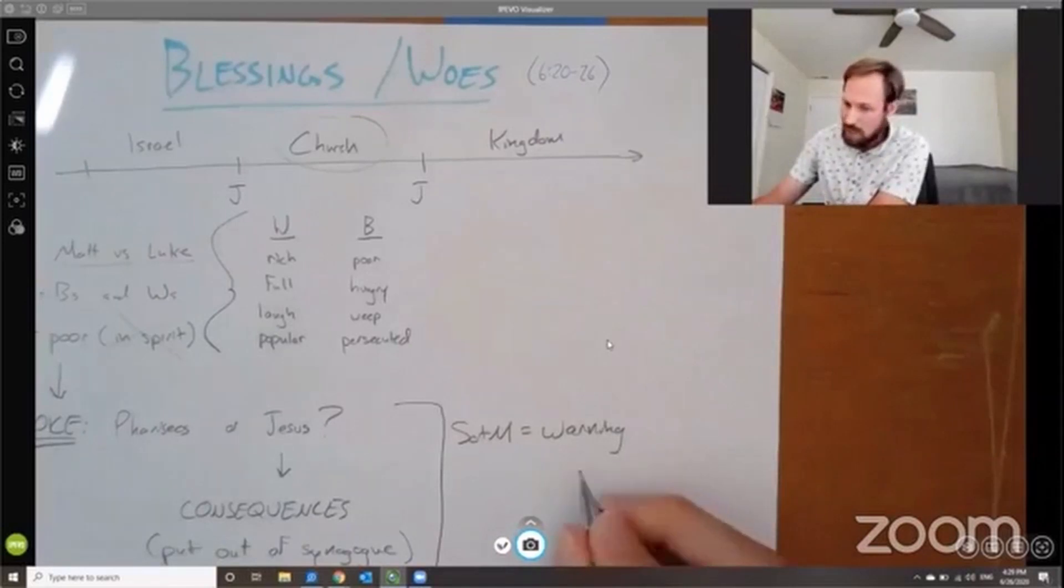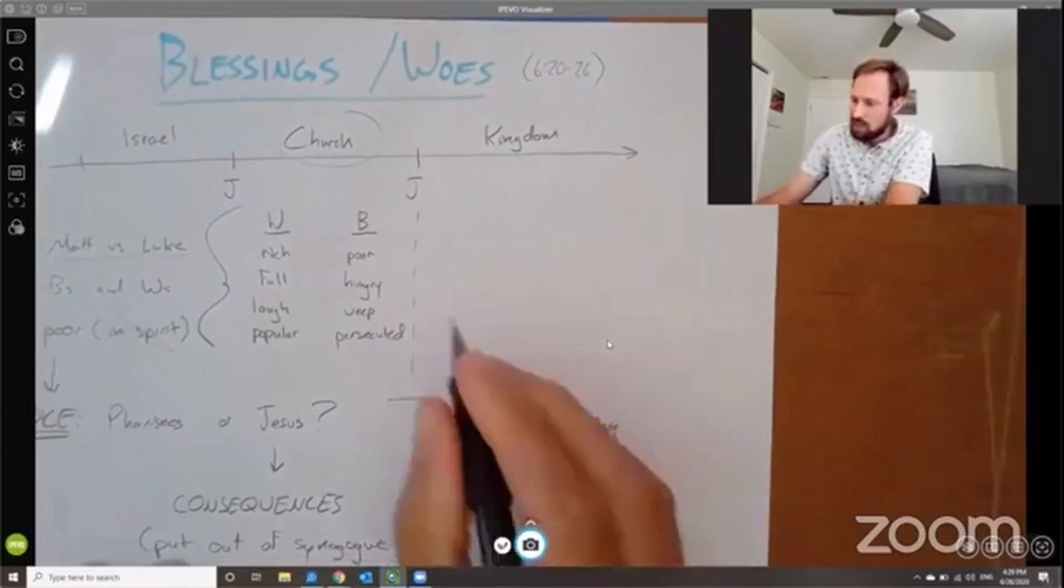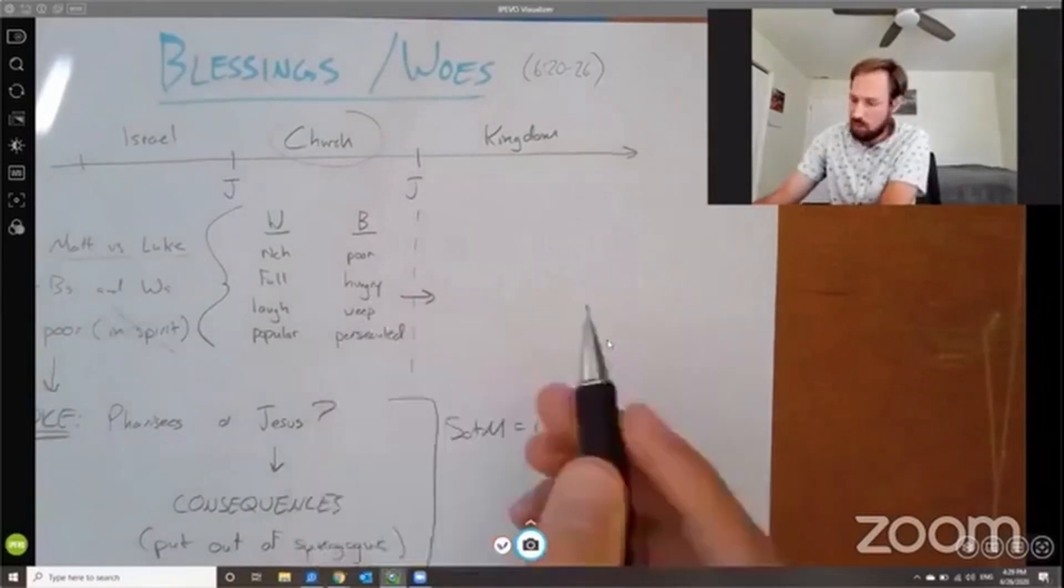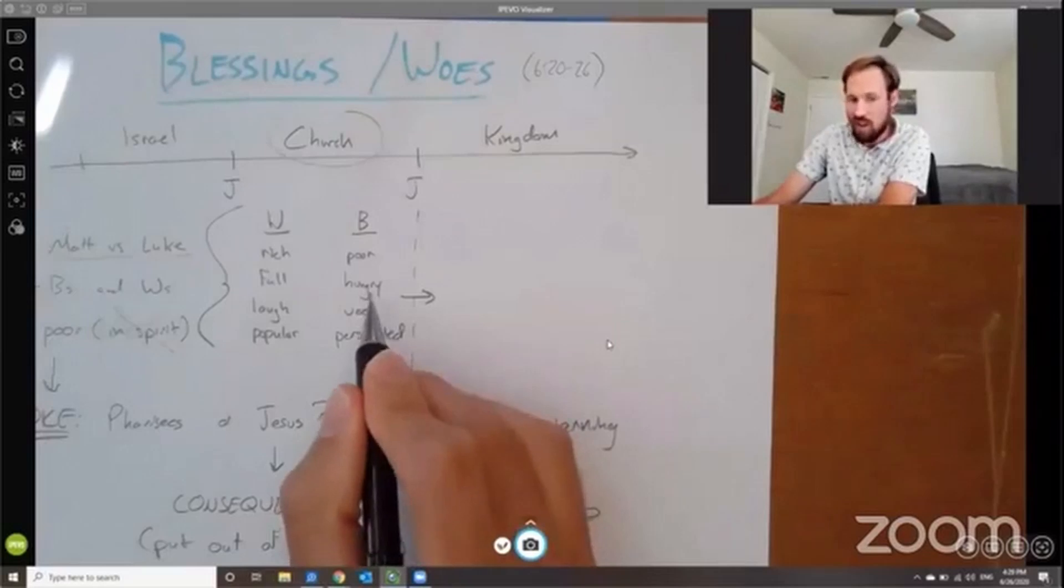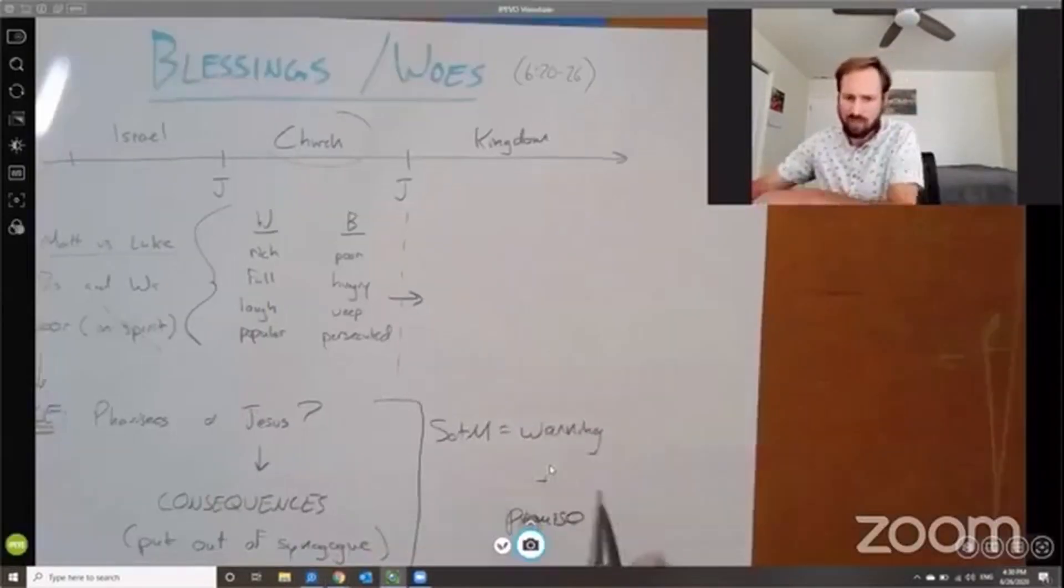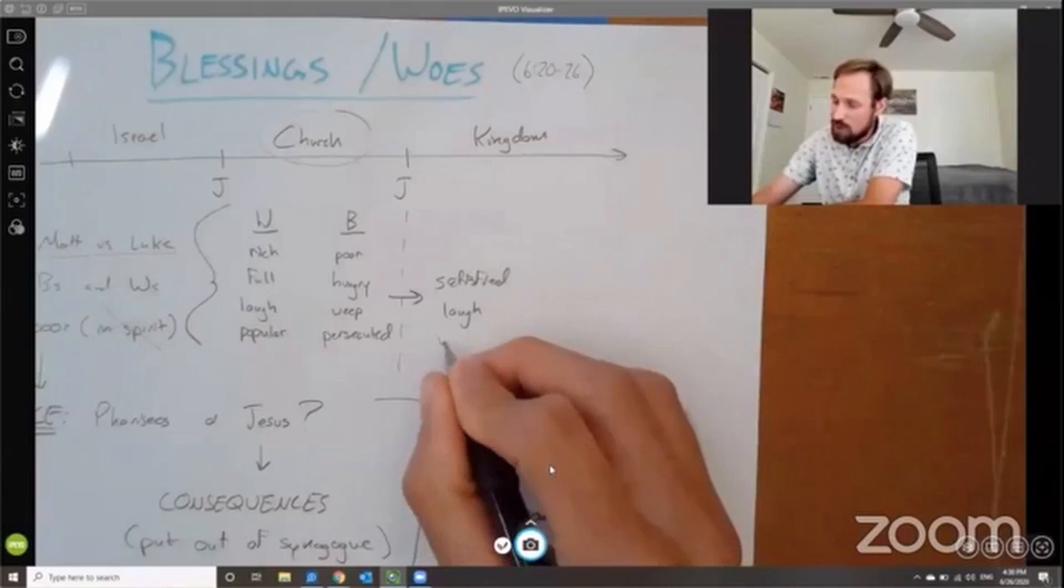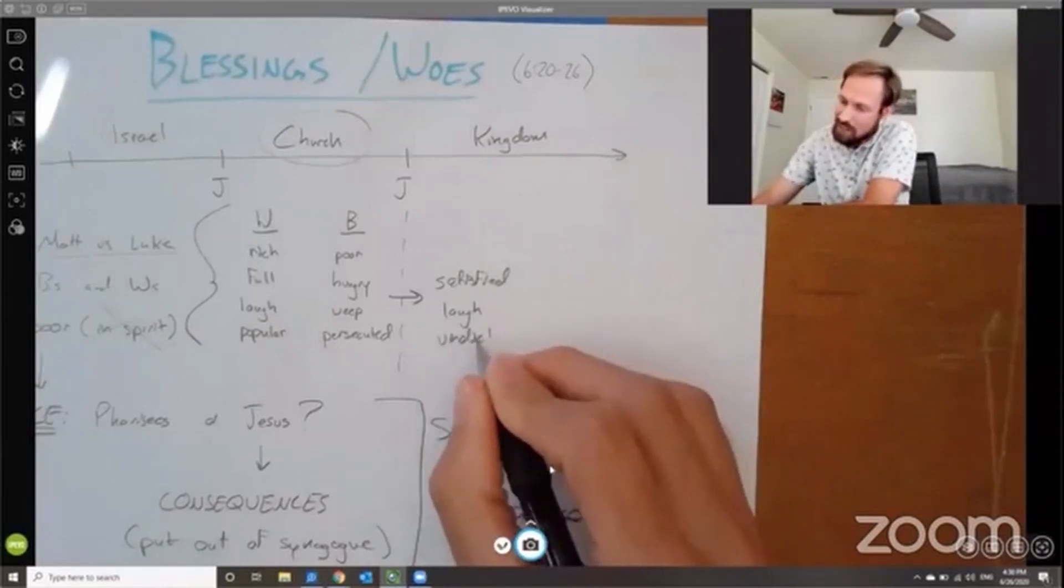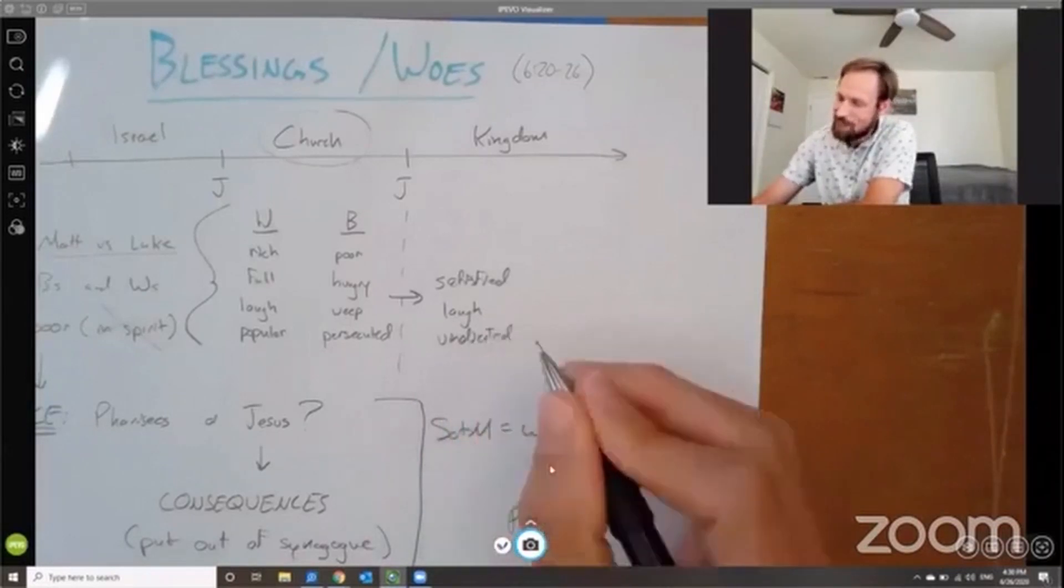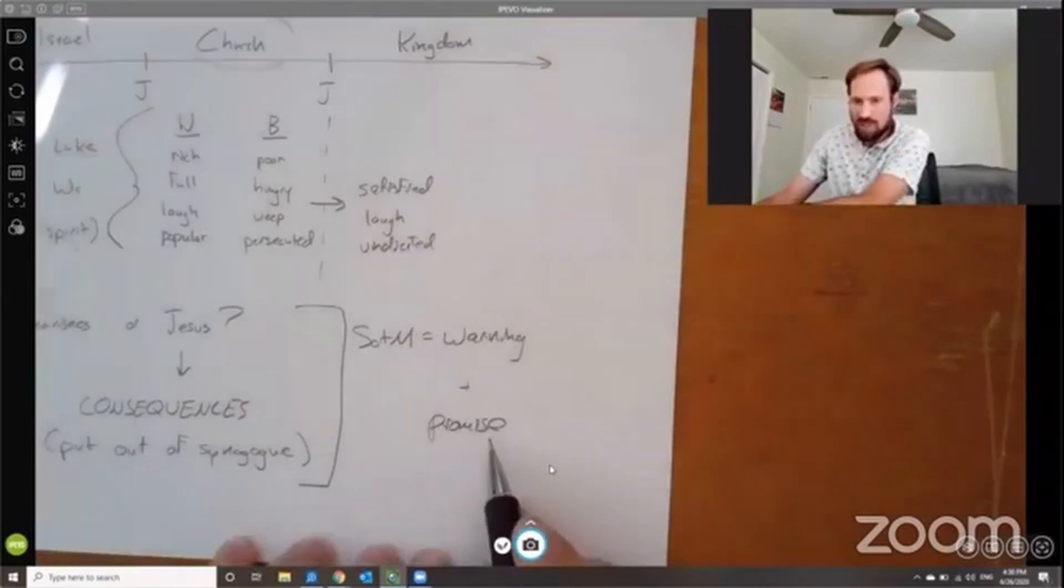So the Sermon on the Mount is a warning, but it's also a promise. It's also a wonderful promise. Let me draw a little dash line here. What does it say in the, in the, the, the Beatitudes and the Sermon on the Mount? What will happen for, you know, right now there, there's a, there's a temporal emphasis in the present of, of hunger. What will happen in the future? Those who are hungry now, they will be satisfied. Those who weep now, they will laugh. Hungry will be satisfied. Those who weep in the coming kingdom will laugh. Those who are persecuted now will be vindicated. It's hard to spell when you're on camera. Okay. Those who are persecuted now will be vindicated.